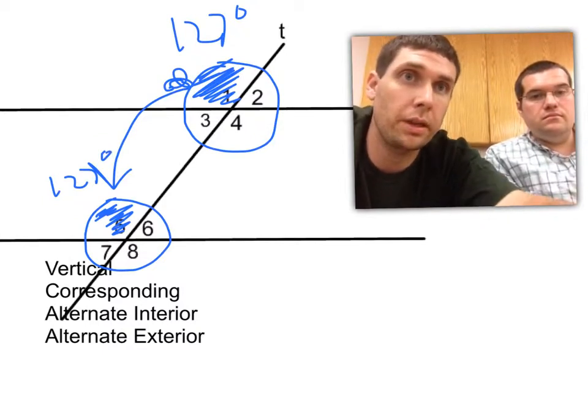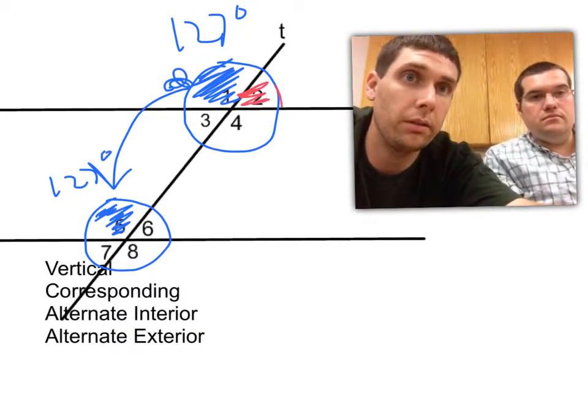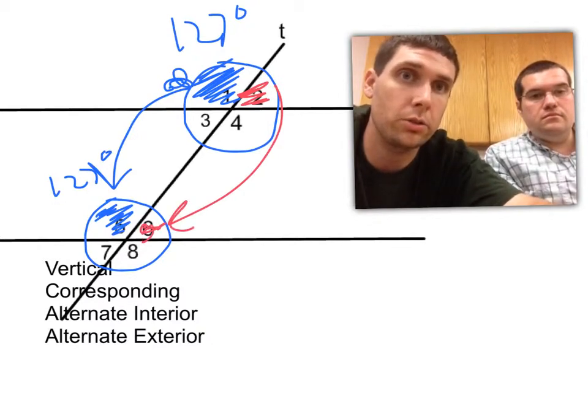Same thing can be said with angle 2. Angle 2 would land on angle 6. Those are corresponding angles as well.